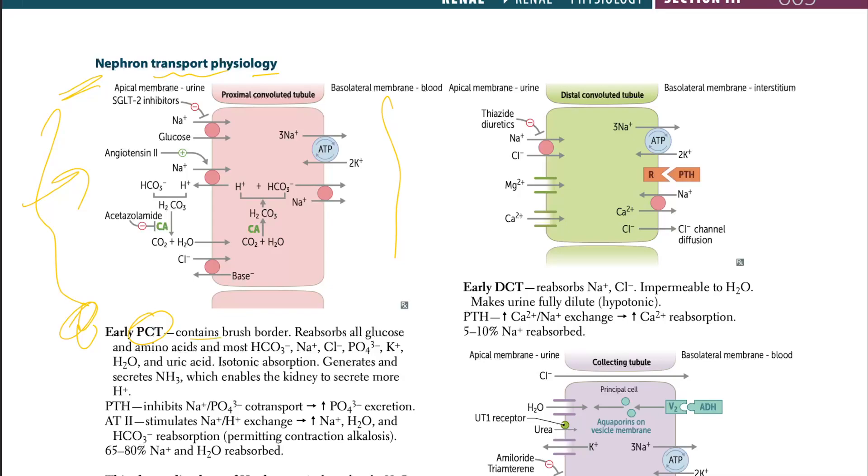So it contains brush borders and reabsorbs all glucose and amino acids. We talked about this in our glucose clearance. That was the Hartnup disease. But moving on, what do we have here? Most of the bicarb, sodium, chloride, phosphorus, potassium, water, mostly, and uric acid.